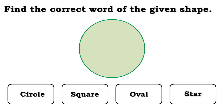Here, the words are circle, square, oval, star. But the correct answer is circle.